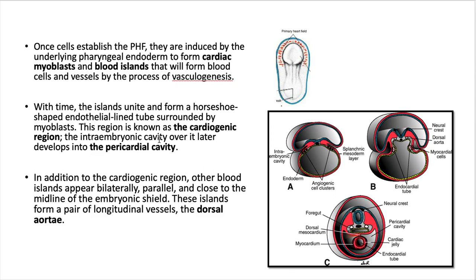The cardiogenic region is made of the endothelial-lined tube surrounded by the epithelial cells. The intraembryonic cavity covering it will later form the pericardial cavity. This is the endothelial-lined tube of the heart. In addition to the cardiogenic region, other blood islands appear bilaterally on each side of the heart tube. Parallel and close to the midline of the embryonic shield, these islands form a pair of longitudinal vessels known as the dorsal aorta.